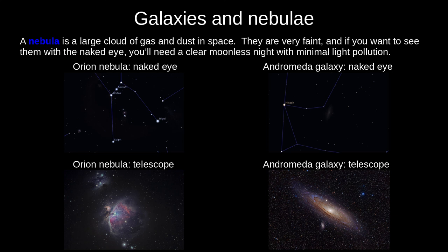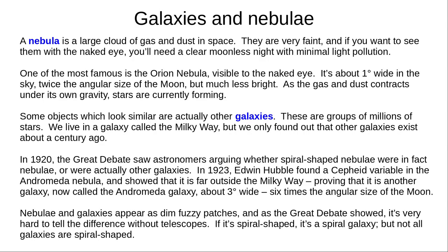Nebulae and galaxies are not the same thing, but they used to be. The Orion Nebula is about one degree across, twice the width of the moon, although much less bright. The nebula is contracting due to gravity, forming new stars. The Andromeda Nebula, as it used to be called, has a spiral shape. In 1920, the great debate saw astronomers arguing whether objects like this were nebulae or other galaxies. At the time, most astronomers thought there was only one galaxy — the Milky Way we live in — and that the universe was only the size of the Milky Way. The word galaxy comes from the Latin for Milky. The great debate was inconclusive.